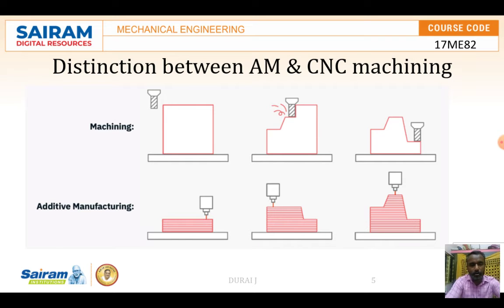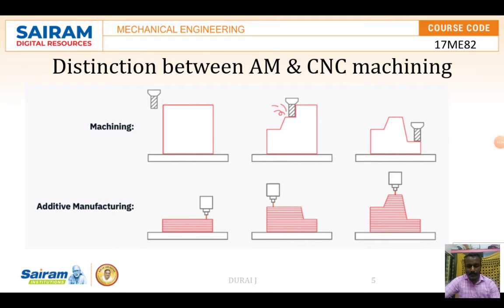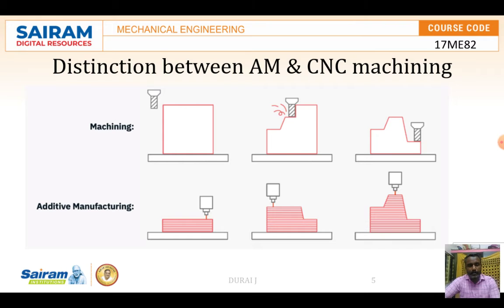In additive manufacturing, the principle is to cut the model into layers and then pile them one upon another — just like building blocks, adding material layer by layer. In CNC machining, there is a reduction in material through various tools running on a high-speed spindle, removing material according to whatever program is written in the input devices.